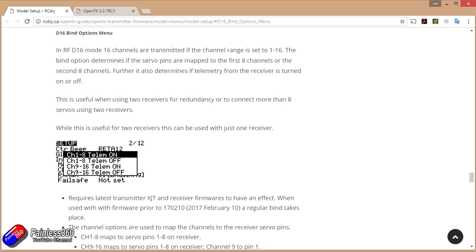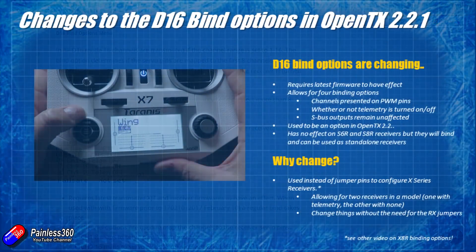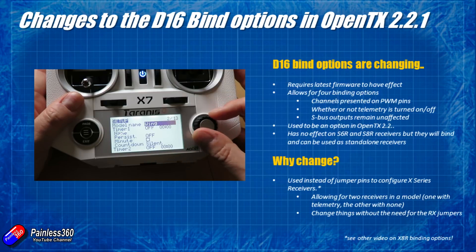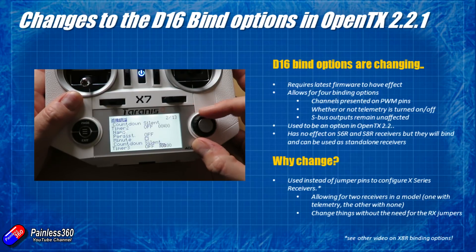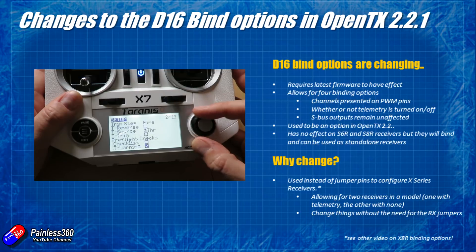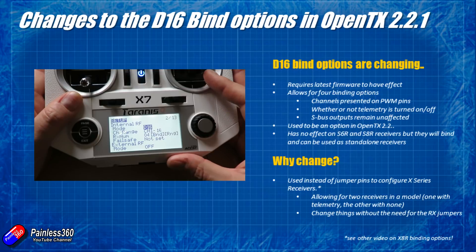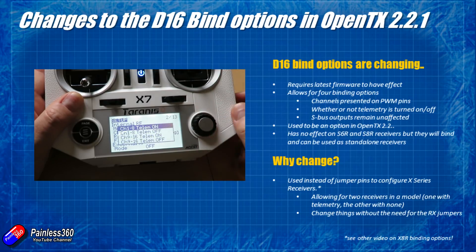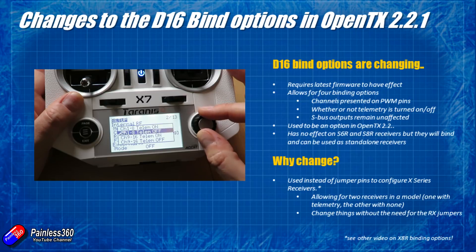There are lots of really cool features coming in OpenTX 2.2.1, but let me quickly cover this one. Every time you go to bind in D16 by default you're going to be asked what kind of bind setup you want. It allows four different binding options — combinations of what channels you want presented on the PWM pins and whether or not you want telemetry turned on or off. The good news is it doesn't affect SBUS outputs, so if you have an SBUS output with standard stuff you're going to be tickety-boo.